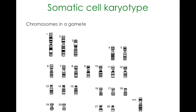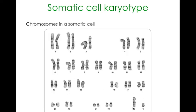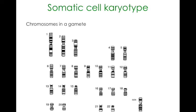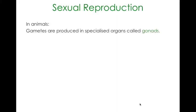Looking at a gamete, the chromosomes will be singular - just one for each pair, and a single sex chromosome, which in this case is the X chromosome. We know that because the X chromosome is larger than the Y chromosome. In sexual reproduction, in animals, gametes are produced by specialised organs called gonads.